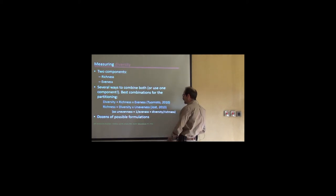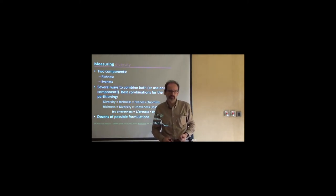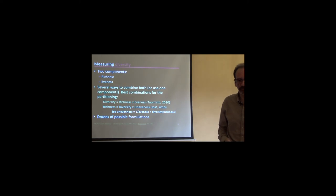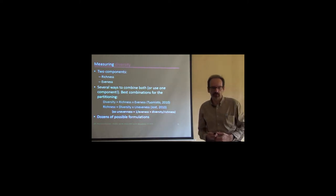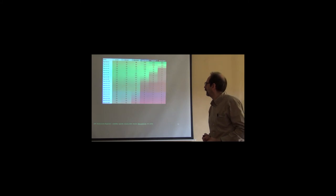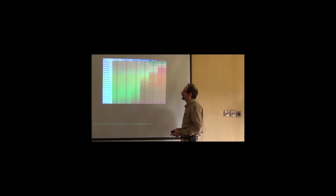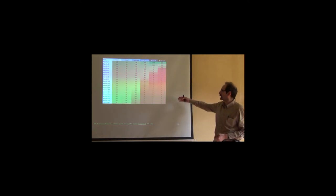In terms of richness, those three cases are exactly the same. They have four species each, but this one has been dominated by the red species, so it has less evenness, and therefore less diversity. It has more dominance. It's a dominant community. So when measuring diversity, we see these two components: richness and evenness, and we have to combine both. However, there are several ways to combine both. Or we might even not combine any. We could reduce ourselves to using one single component, such as richness, number of species.